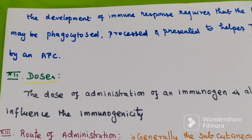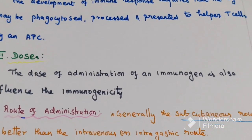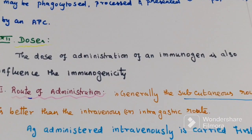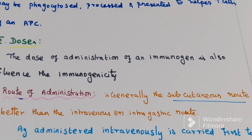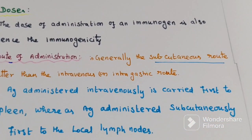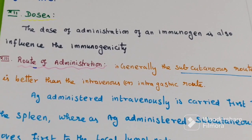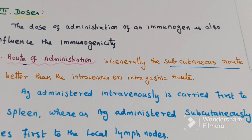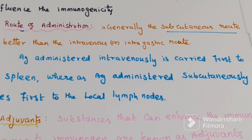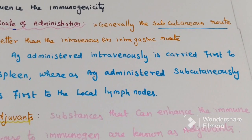The twelfth factor is dose of antigen. The dose of administration of an immunogen also influences immunogenicity. There is a dose of antigen above or below which the immune response will not be optimal. The thirteenth factor is route of administration. Generally, the subcutaneous route is better than the intravenous or intragastric route. The route of administration can also alter the nature of the response — antigen administered intravenously is carried first to the spleen, whereas antigen administered subcutaneously moves first to the local lymph node.